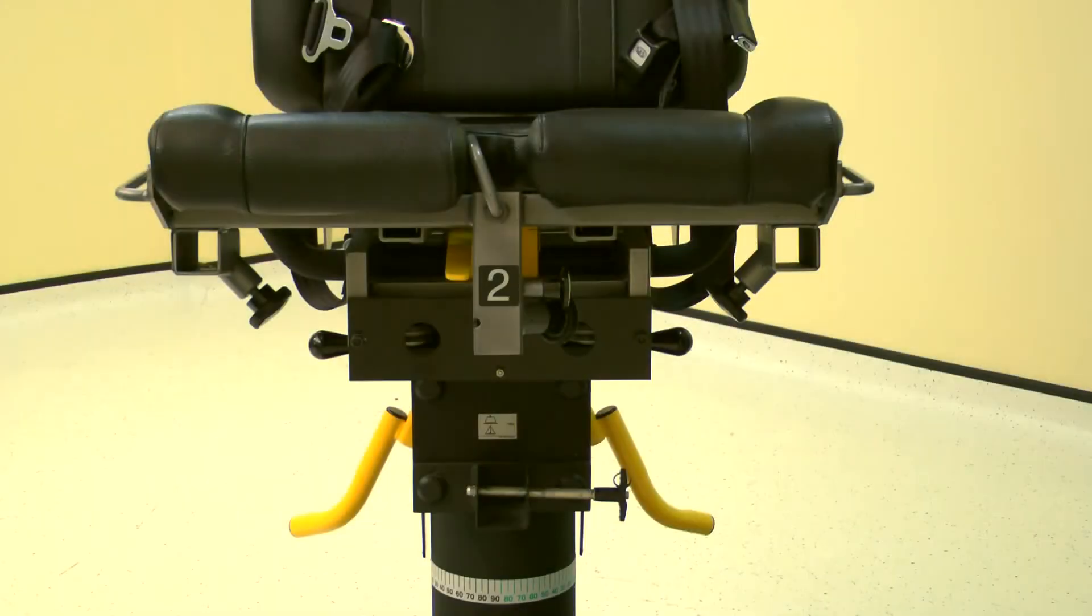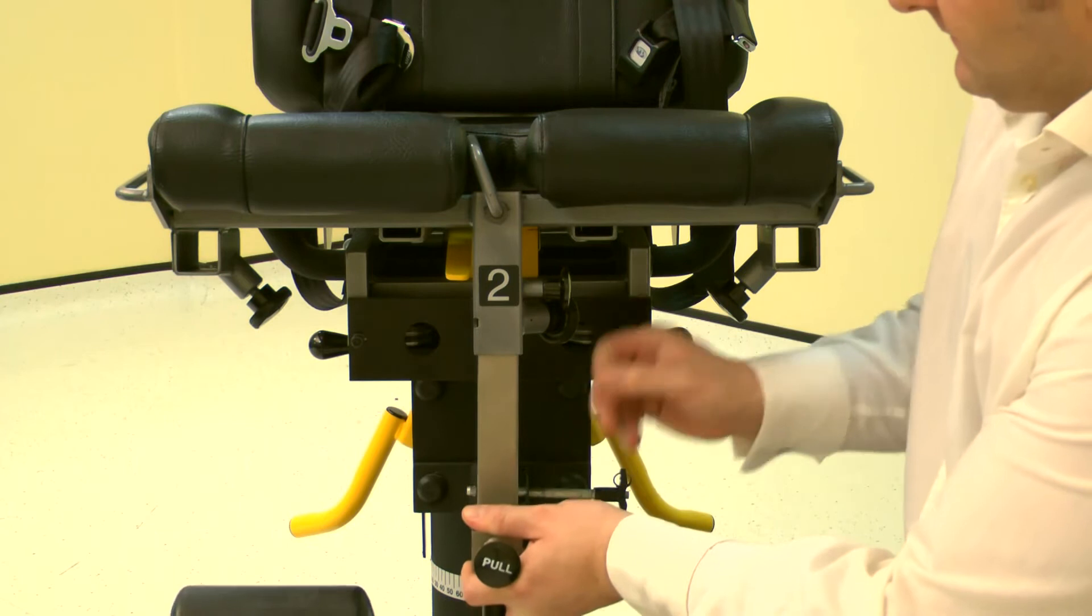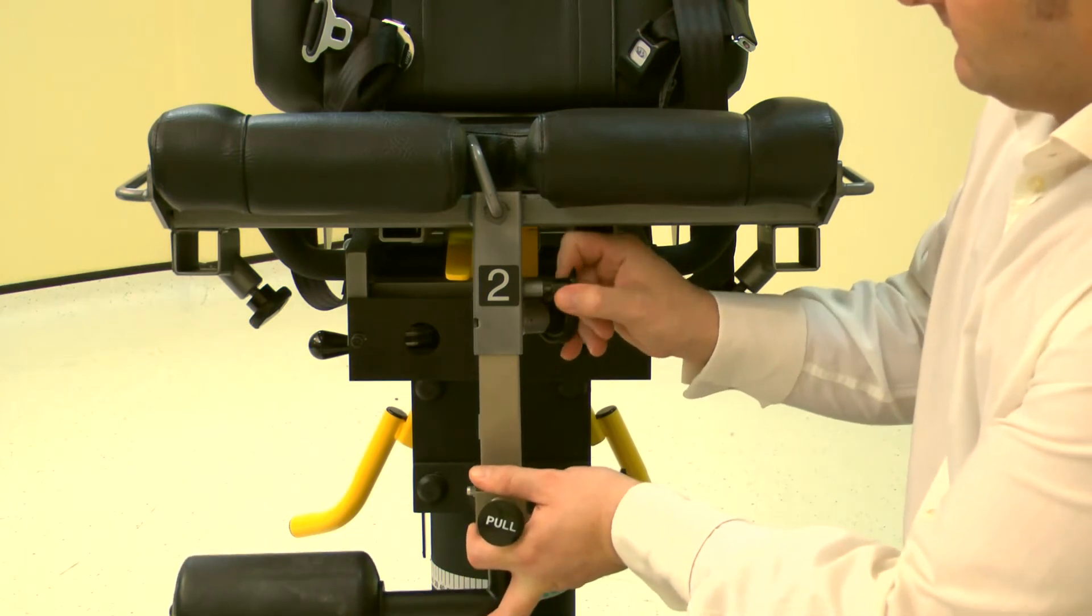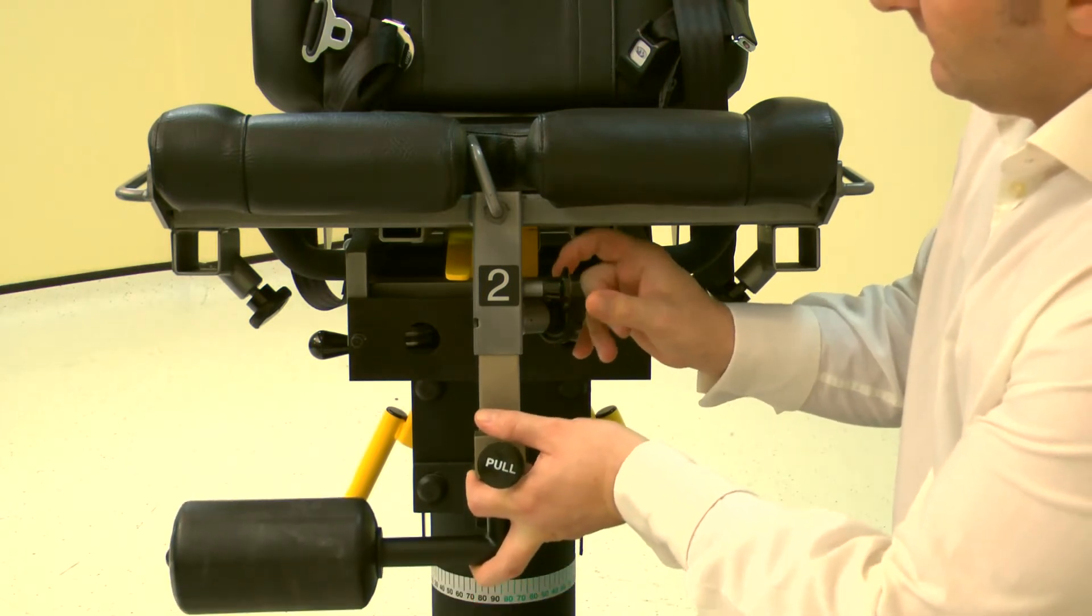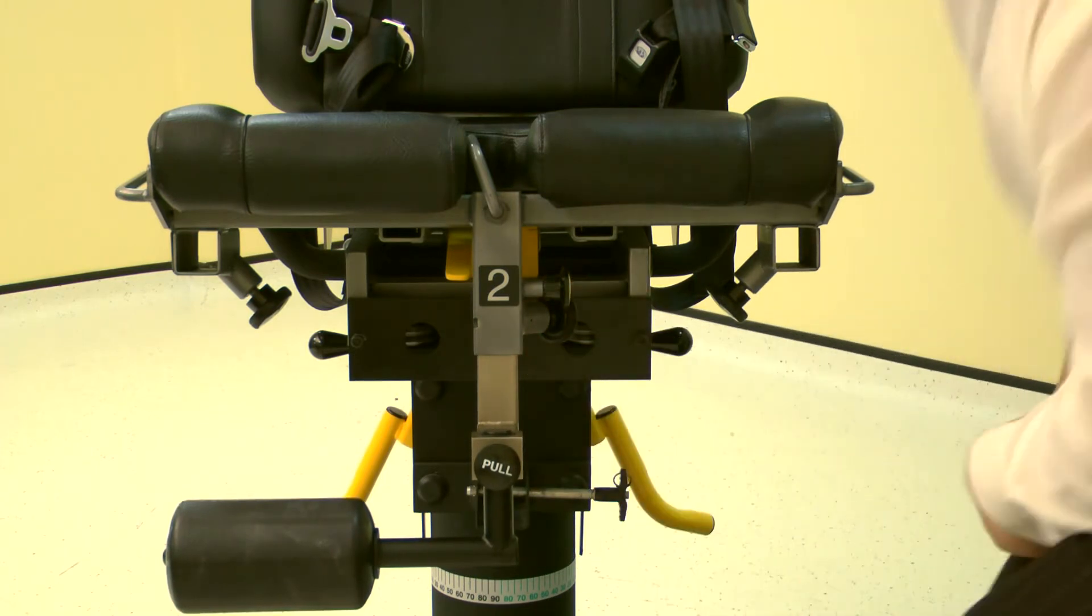If required, insert the contralateral limb stabilizer into tube 2. Ensure the stabilizer is facing the limb not being tested. Pull the locking pin to adjust for height then secure with the screw handle.